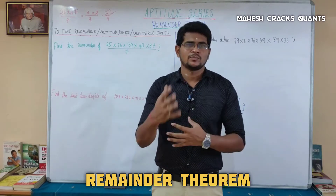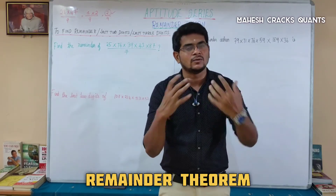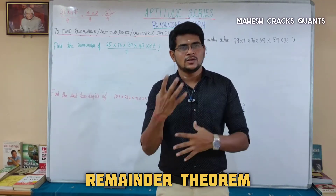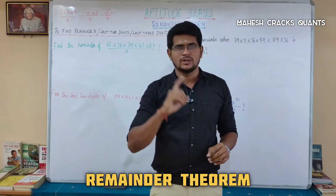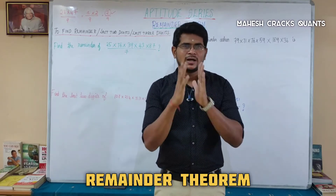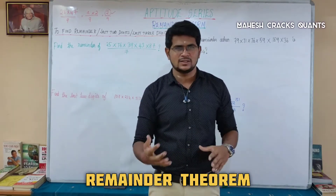So for example, 28 divided by 9 — what is the remainder? 28 divided by 9, remainder is 1. That remainder is found using the same method.